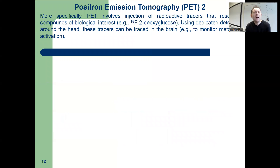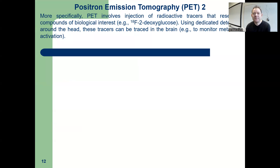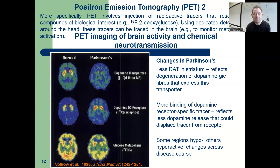More specifically, PET involves injection of radioactive tracers that resemble compounds of biological interest, for example deoxyglucose. These are detected with detectors around the head, and these tracers can be traced in the brain — for example, to monitor metabolic activity in those regions of the brain.